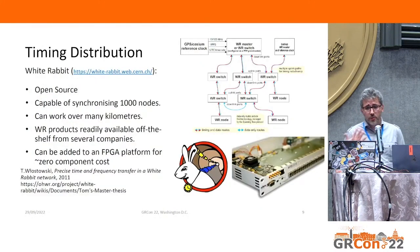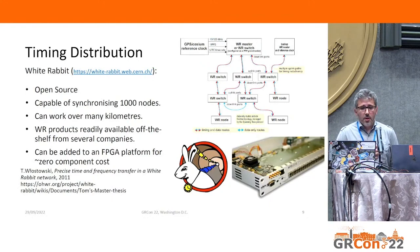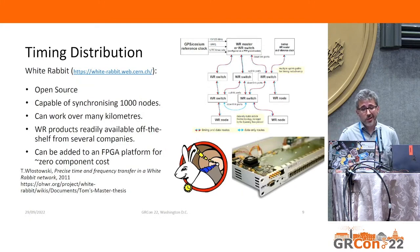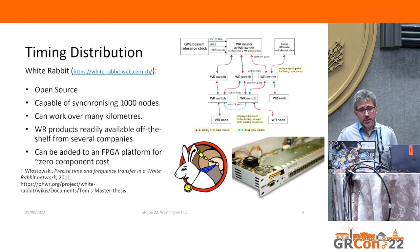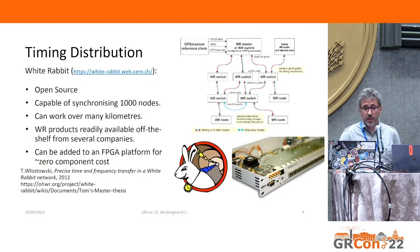In terms of time and frequency distribution, we have White Rabbit. It's open source, capable of synchronizing around 1,000 nodes, works over many kilometers, and is readily available — there are companies you can buy from and they're not particularly expensive. In terms of implementing this on your platform, the cost is almost zero; the extra components needed are really very little — a couple of extra clocks and some control logic.